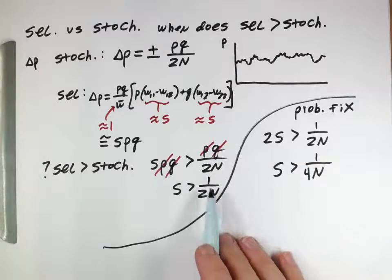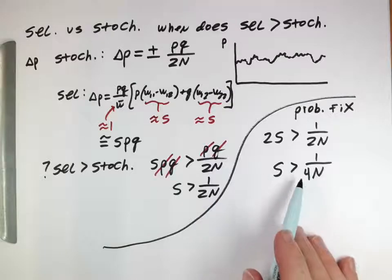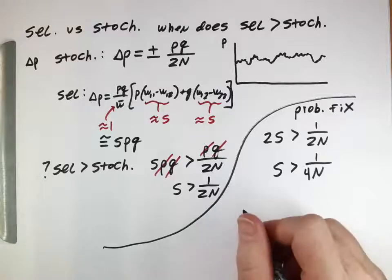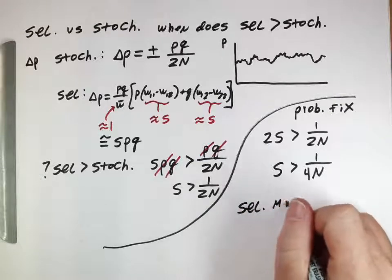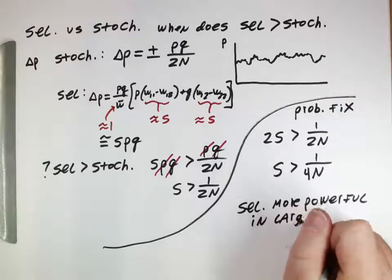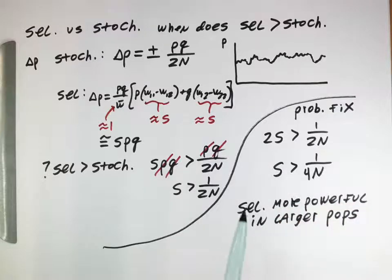The equations aren't exactly the same, s being larger than 1 over 2n versus s being larger than 1 over 4n, and some of that has to do with what we've done there. But the key thing we see with both of these is that selection is more powerful in larger populations. How advantageous something needs to be for selection to beat drift depends on the population size. The larger the population gets, the larger the denominator, the smaller this value gets.